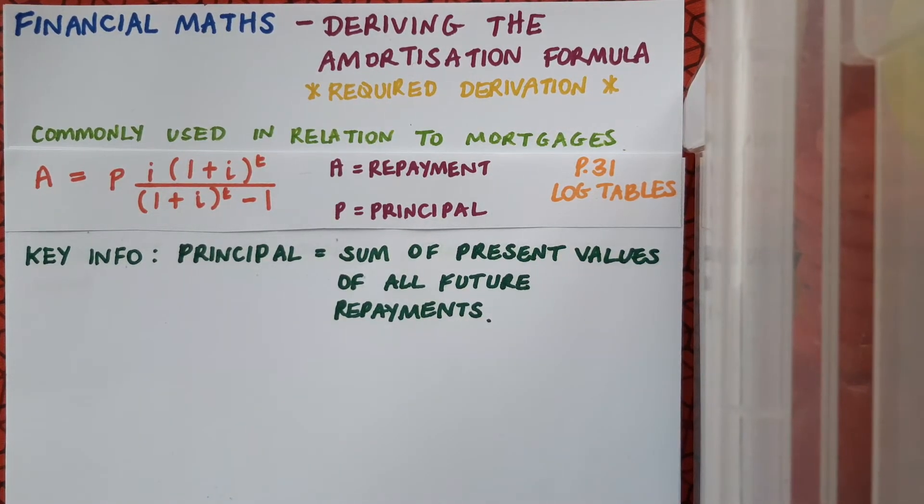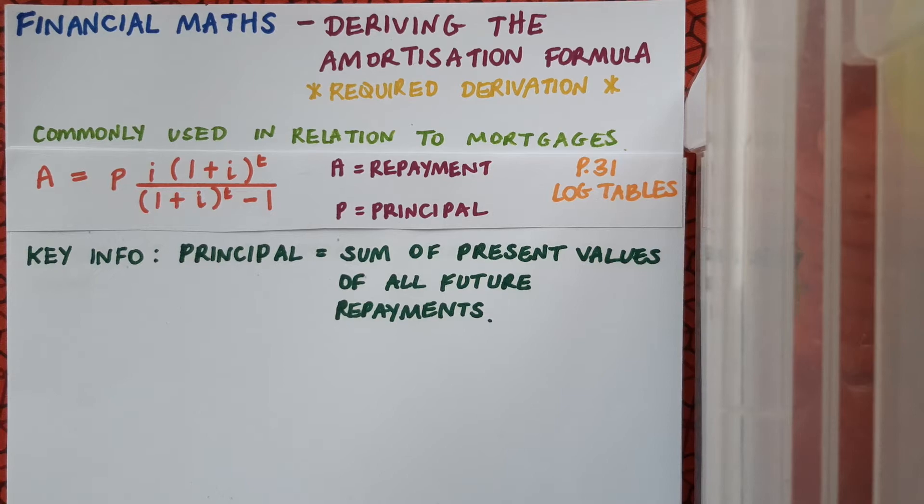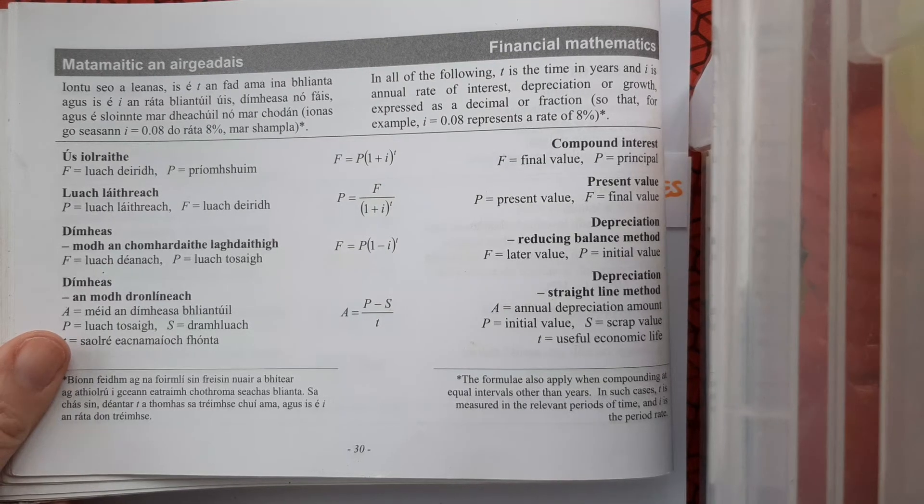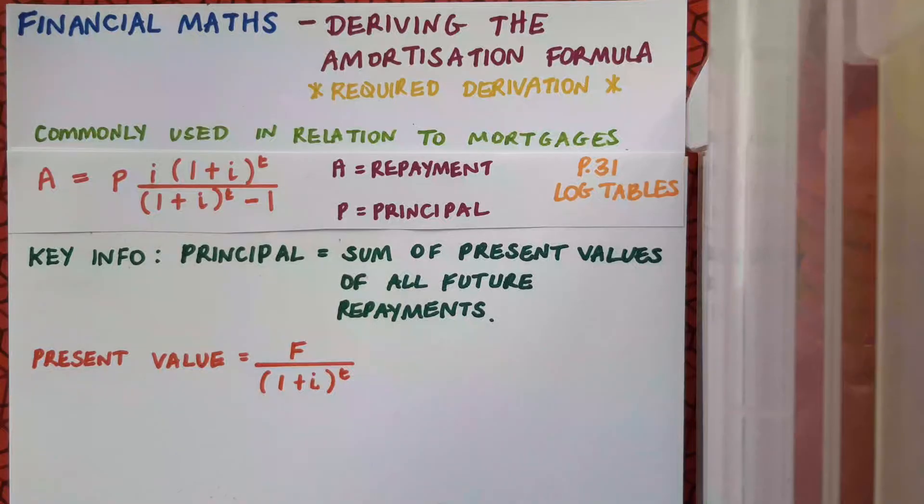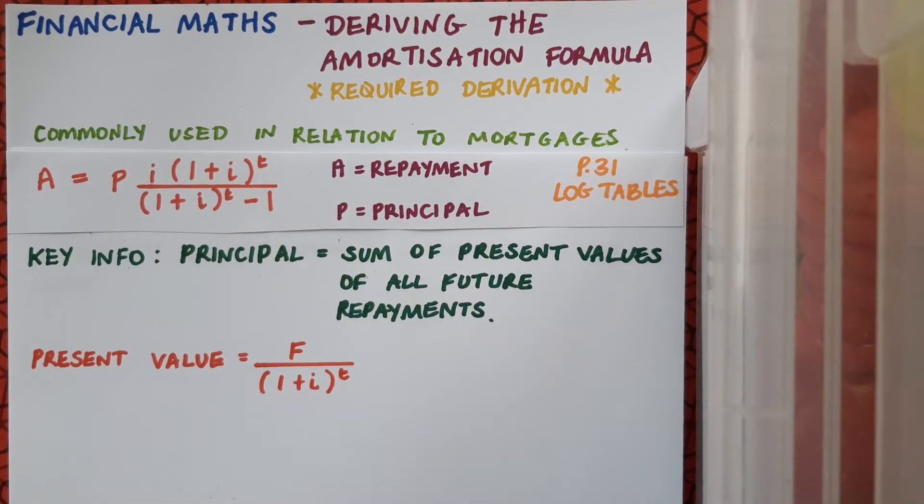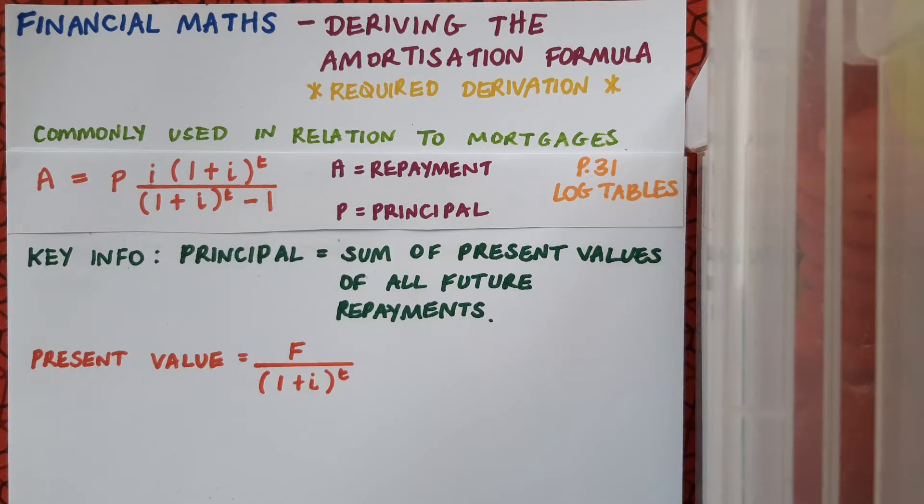So that means for this derivation, I need to go back to my log tables a couple more times. First of all, on page 30, I'm going to be using this present value formula. So present value equals future value over 1 plus I to the power of T, and I'm not going to call present value P here, I'll just call it present value to avoid confusion with P for principal.